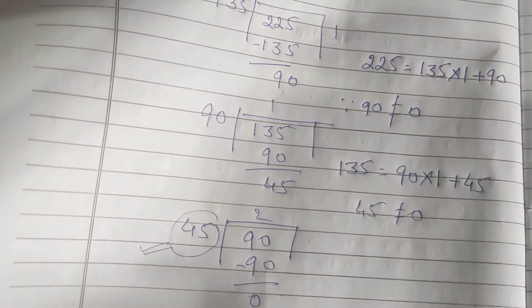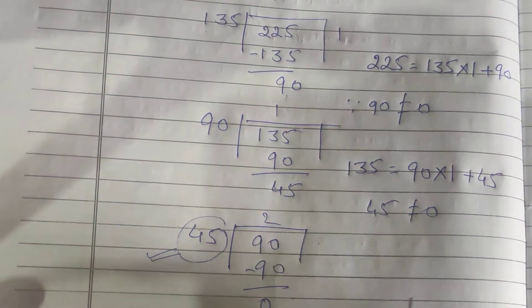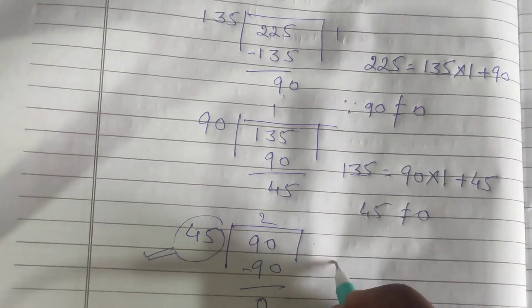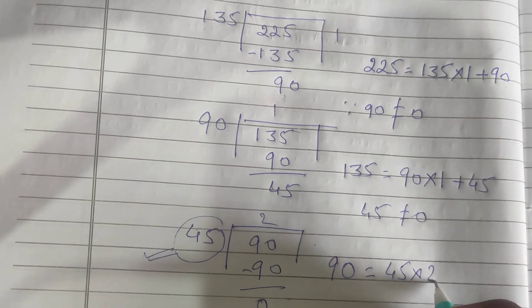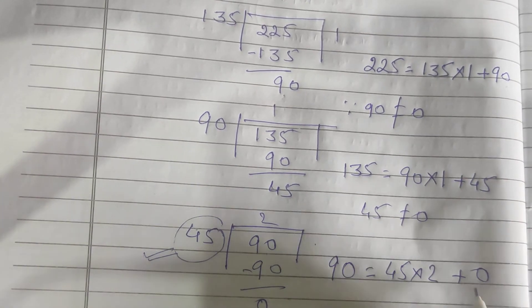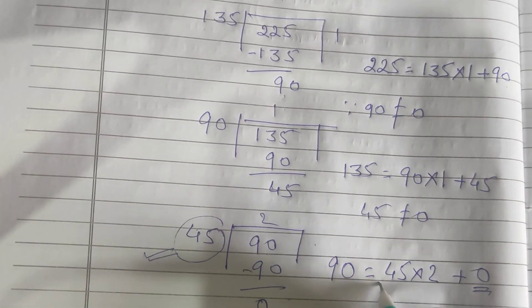We proceed further: 90 = 45 × 2 + 0. Here remainder is 0, so our HCF is 45.